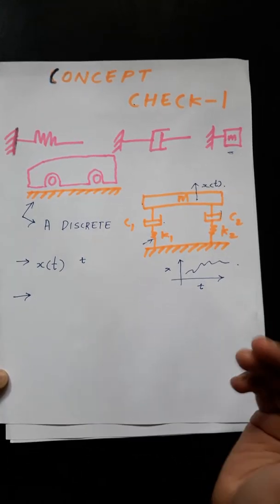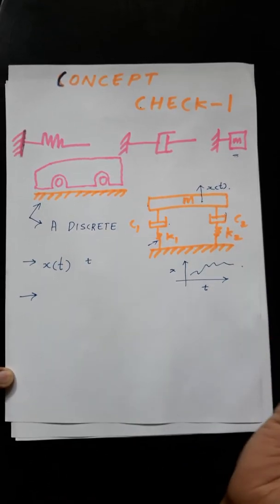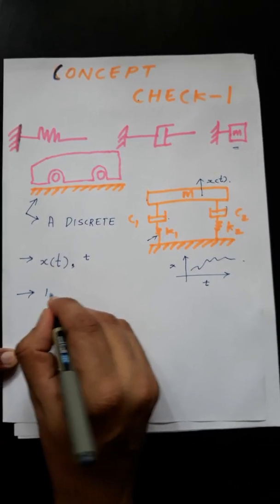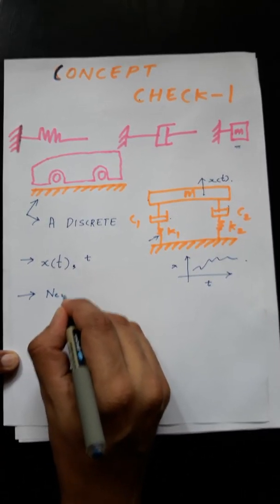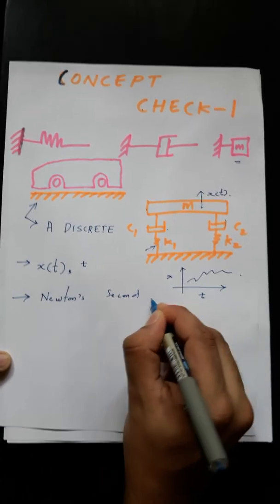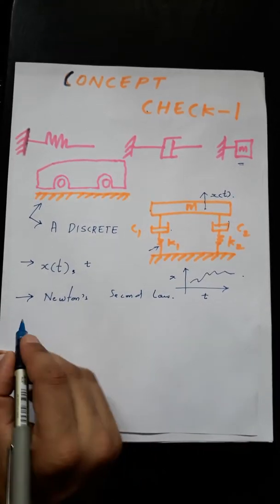So t being the time. So you want to find out how your x is varying with respect to time. If I plot it like this, I want to figure out how this particular curve will look like and how you are going to go about doing it. You should have a differential equation to solve it.